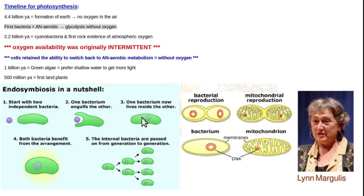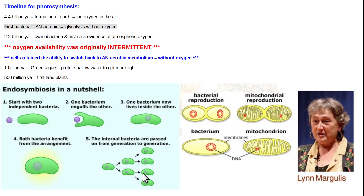They had a mutually beneficial relationship: the larger bacterium could phagocytize food particles and provided a protective, stable environment for the mitochondrion. When they replicated, they did so simultaneously. This is how mitochondria became present in all multicellular organisms. The history of oxygen being only intermittently available, and original bacteria being able to switch to anaerobic metabolism, is a key point about how cells work.